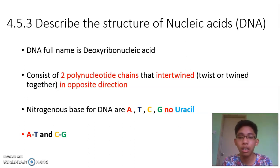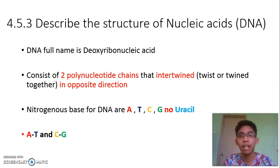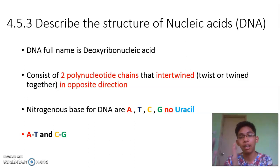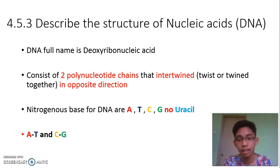The nitrogenous bases for DNA are A, T, C, G. A pairs with T, and C pairs with G. You cannot have A pairing with C or A pairing with G — adenine must pair with thymine, and cytosine must pair with guanine. To remember easily, just say A-T, C-G.